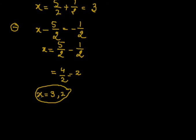We can see that in the last method — the factorization method — the solution was the same: 3 and 2. This is the second method to solve a quadratic equation. In the next class, we will discuss the quadratic formula. Thank you.